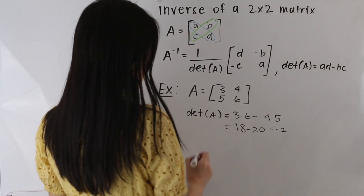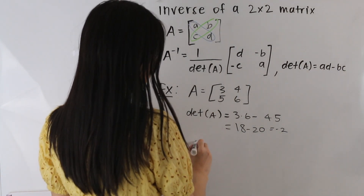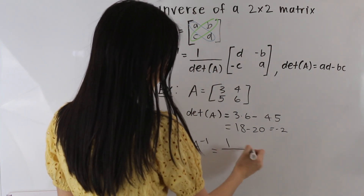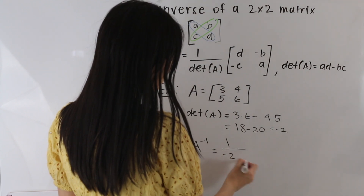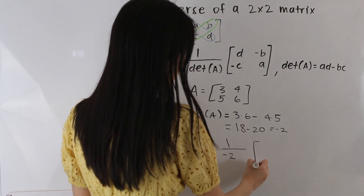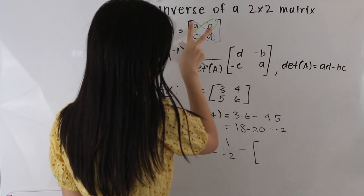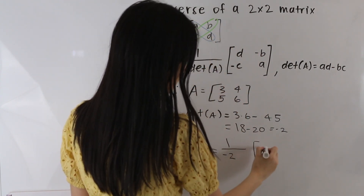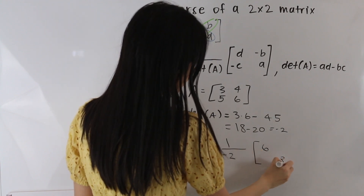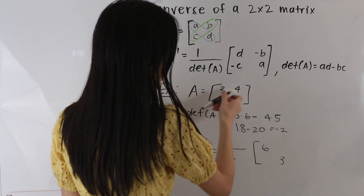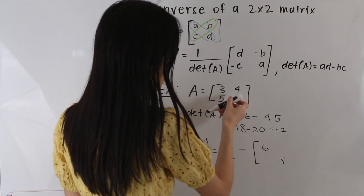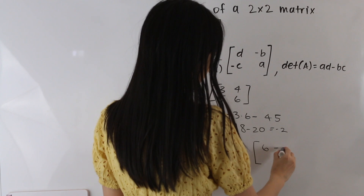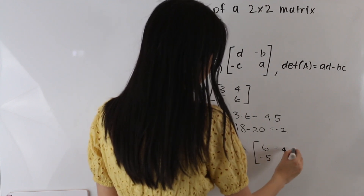Now let's go ahead and determine what our inverse is. So we have 1 over the determinant of A, so 1 over negative 2. And then we have this matrix here, where we flipped the two terms on this diagonal. So we have 6 here and we have 3 here. And then remember that this diagonal here, the elements stay in the same place, but we take the negative of these terms. So we end up with negative 4 and negative 5 here.